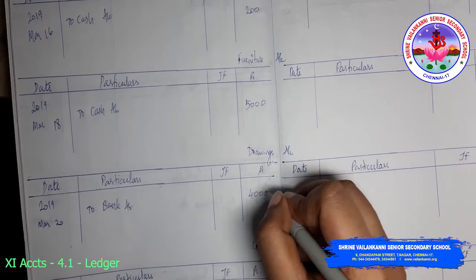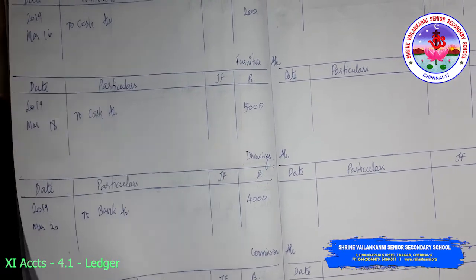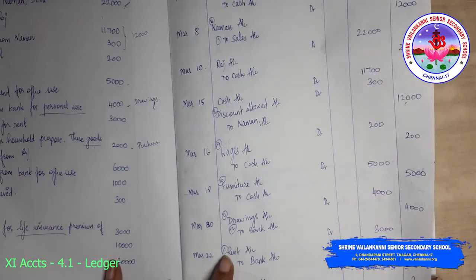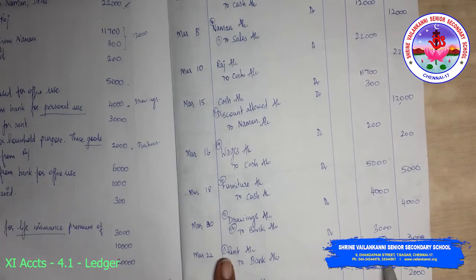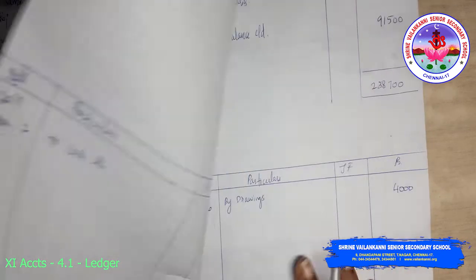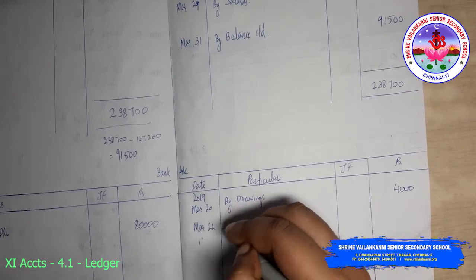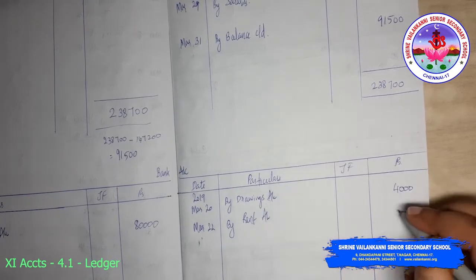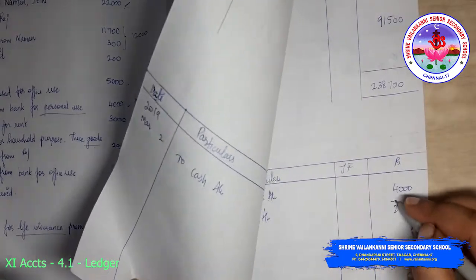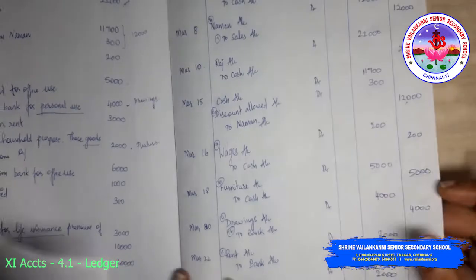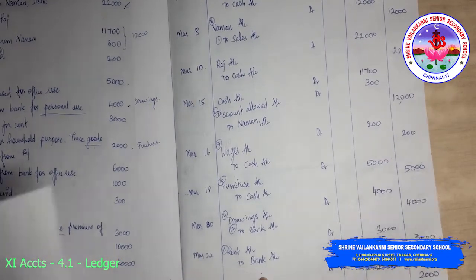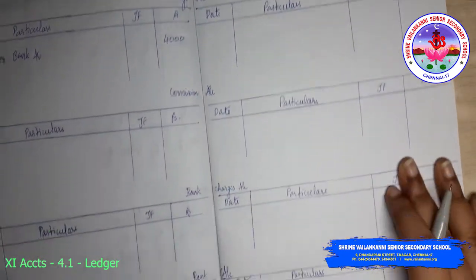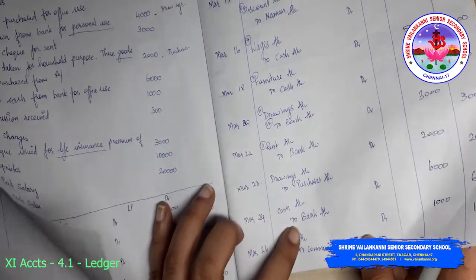The next one: rent to bank. So here you have 'to bank', so by rent you will write 3000. March 22, buy rent account 3000. Under rent you will write 'to bank'. So rent to bank.